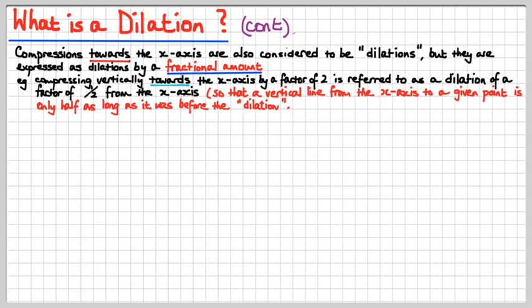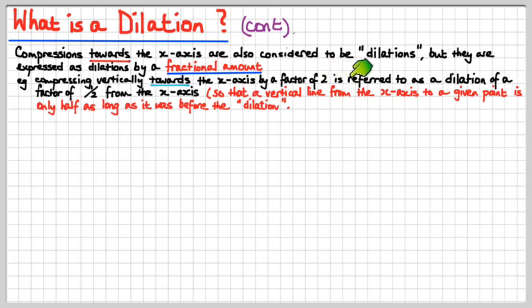Compressions — you wouldn't really call them a stretch, but they're kind of the same concept. A compression towards the x-axis is also considered to be a dilation, but expressed as a dilation by a fractional amount. Compressing vertically towards the x-axis by a factor of 2 — halving every value of y for a given value of x — is referred to as a dilation of a factor of one-half from the x-axis, so that a vertical line from the x-axis to a given point is only half as long as it was before the dilation.